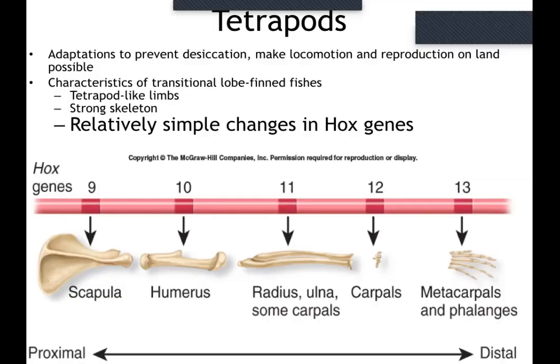There are these genes called Hox genes that are in you and every vertebrate animal, and it doesn't take much to change these genes to make something a wing, an arm, a leg, or a fin — just modifications of these genes. So it seems like it wouldn't take much to modify a fin of a lobed-fin fish to become something leg-like.